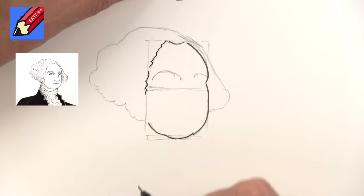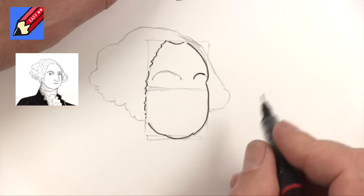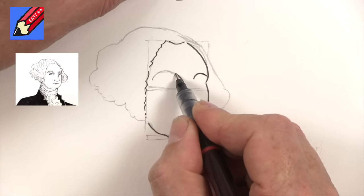And then a bit of a curly kind of line coming down there. We're going to go up and across like that and then up and around like that for his other eyebrow.